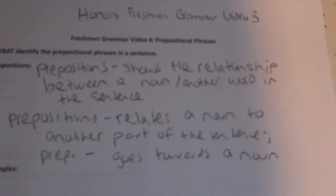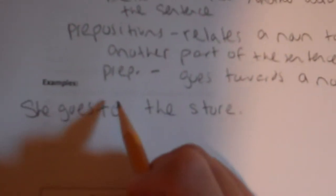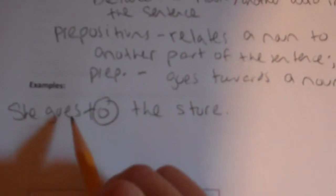These definitions might not make much sense yet, but they'll make sense once we go through some examples. For example, take the sentence 'She goes to the store.' Notice that 'to' relates 'goes' to 'store' — it's telling you where she's going.